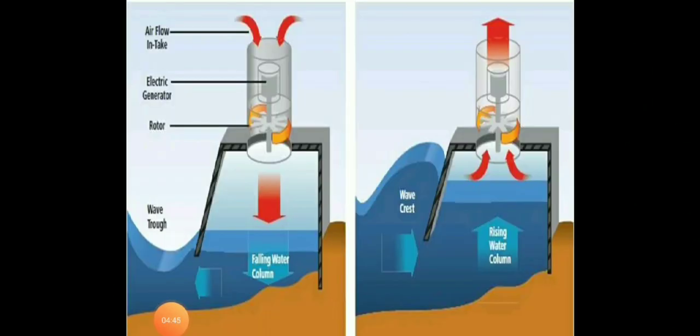Looking at the figure, there is a wave trough and a wave crest. The crest is the highest portion. When the water rises at the wave crest, the air is compressed, pressure increases, and the rotor will rotate.